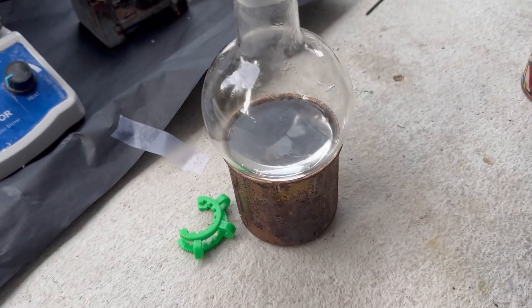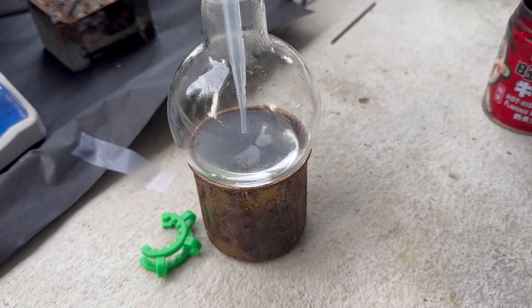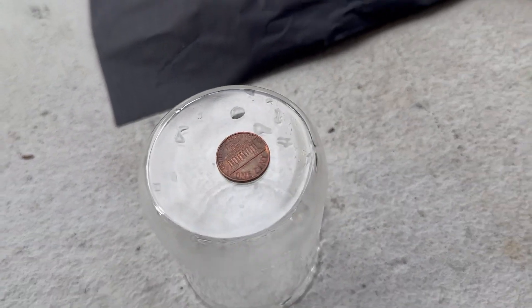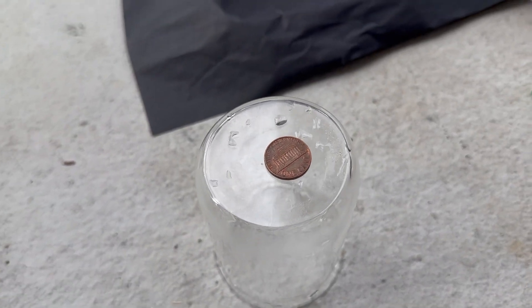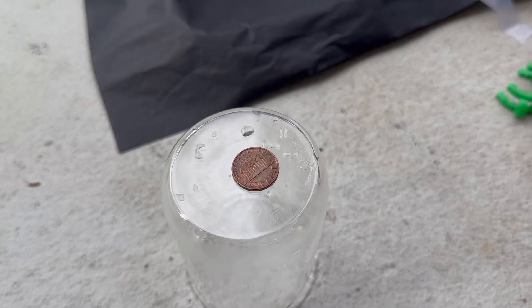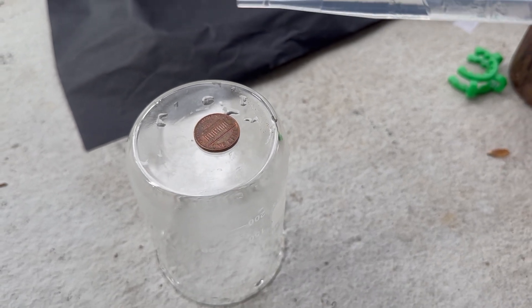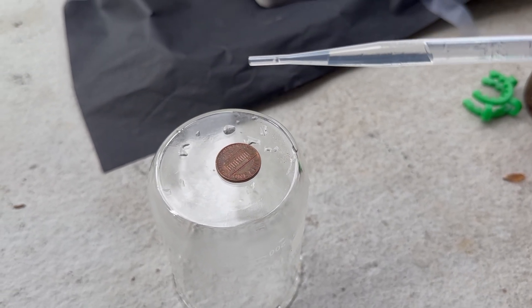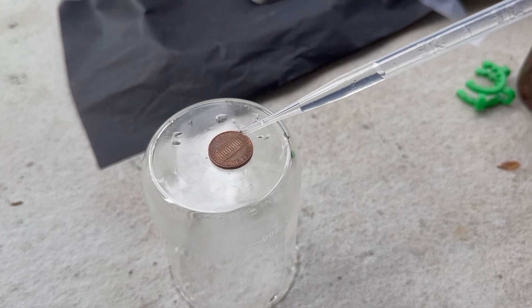All right, this is the moment of truth. So here I'm gonna pipette some up, and we have a 1980s penny, which means that this one will be mostly copper. So if this starts dissolving and gives off nitrogen dioxide fumes, we know we've got the right thing.